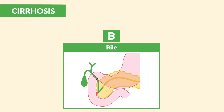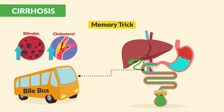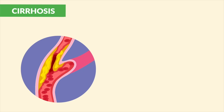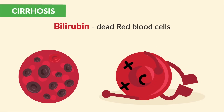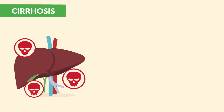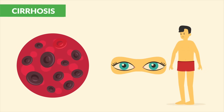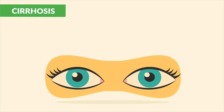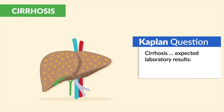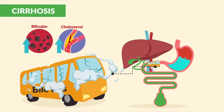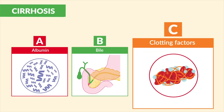B is for bile, which acts like a bile bus helping to scoop up excess cholesterol and bilirubin, taking them from the body into the bowels. Too much cholesterol can clog the arteries leading to cardiac issues. Bilirubin comes from dead red blood cells. When the liver fails, we get a buildup of high cholesterol and high bilirubin — bilirubin turns the body jaundiced, making the skin and the sclera (white part of the eyes) yellow. Kaplan notes that elevated bilirubin is an expected lab result in cirrhosis.